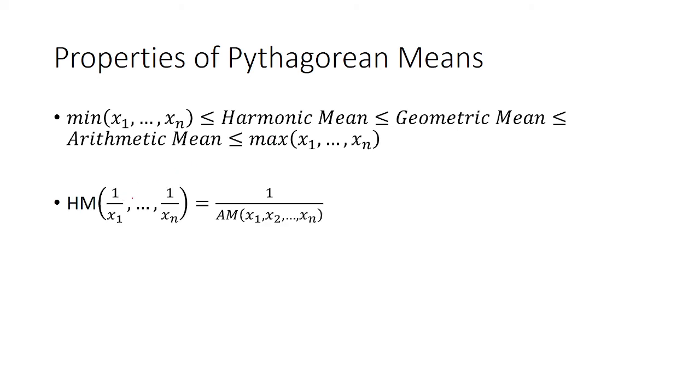The harmonic mean and the arithmetic mean are reciprocal duals of each other, only for positive numbers. Taking the harmonic mean of 1 over x1 up to 1 over xn is the same thing as taking 1 over the arithmetic mean of x1 up to xn.